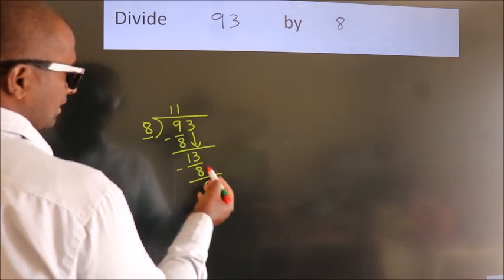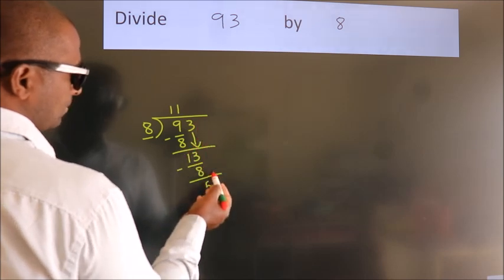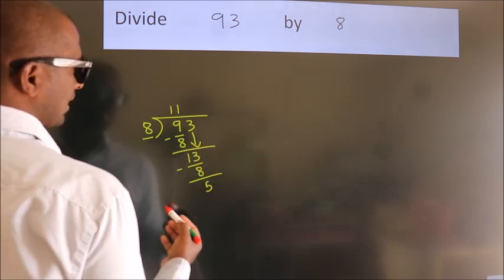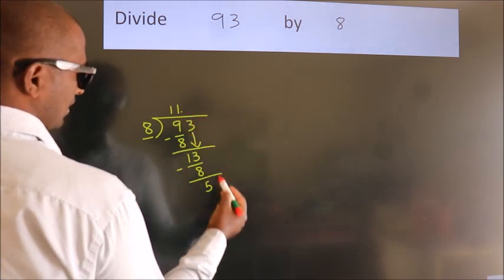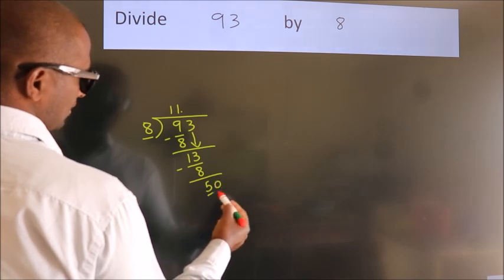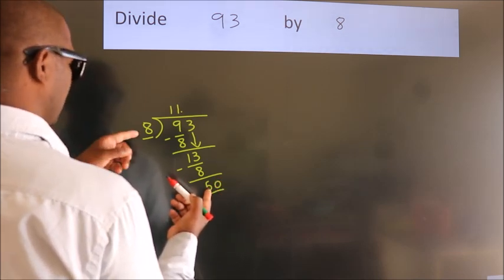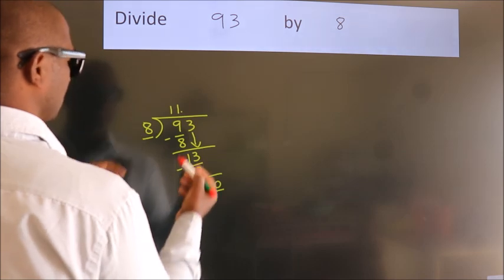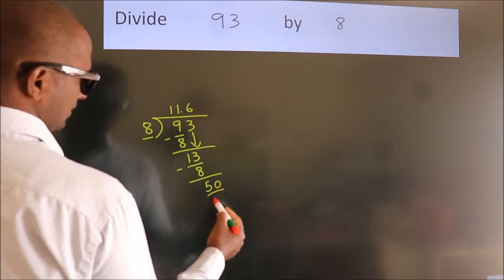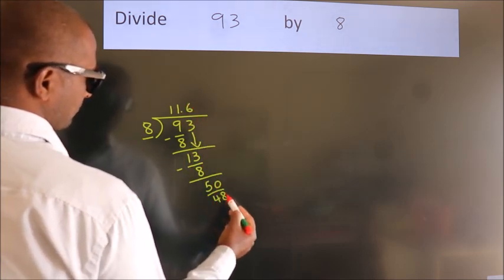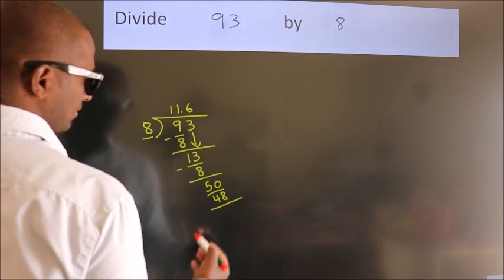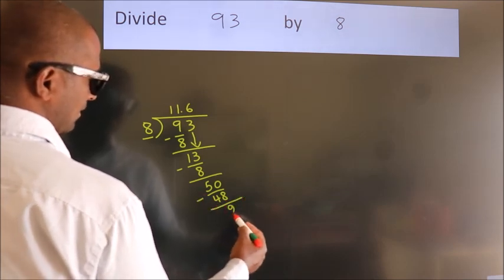After this, no more numbers to bring down. So, what we do is we put a dot and take 0. So, 50. A number close to 50 in 8 table is 8 times 6, 48. Now, we subtract. We get 2.